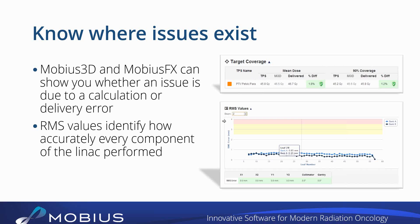We can point you in a direction as to where to look. And if it is something having to do with the machine, because we have all of the machine information from Mobius FX, we calculate the root mean square errors for just about every aspect of the machine's movement. Every single leaf is checked — we will show you what the root mean square difference is. If you've got a leaf motor that is failing, you're going to see a spike. We also calculate RMS errors for each one of the jaws, for collimator and gantry angles — anything that could possibly go wrong, we're going to capture that and show it to you.